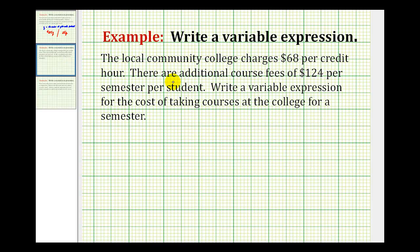In this example, the local community college charges $68 per credit hour. There are additional course fees of $124 per student per semester. Write a variable expression for the cost of taking courses at the college for a semester.